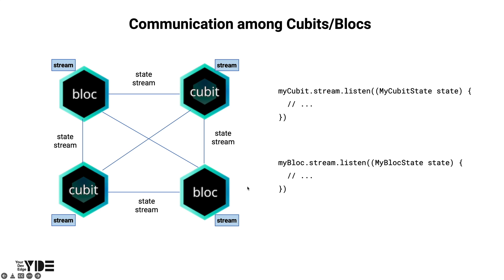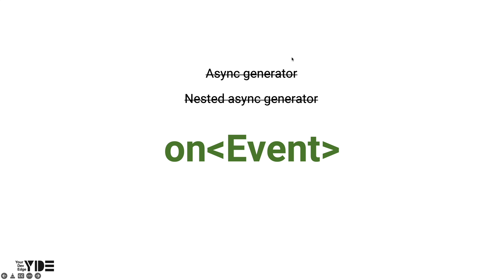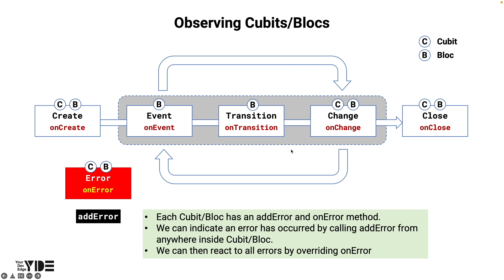There are cases where you need to know the value of another state to get the current state value. In Flutter Bloc, the entity that handles state is Cubit or Bloc, so communication between Cubits or Blocs must be possible. You will learn how to communicate. We'll also find out what tools Cubit or Bloc provides to use their functions in the UI. The async generator in nested async generators — one of the things that beginners were reluctant to use — is no longer needed from version 8.0. Instead, learn about the newly introduced on event API. Flutter Bloc also allows you to observe what is going on in Cubit or Bloc.